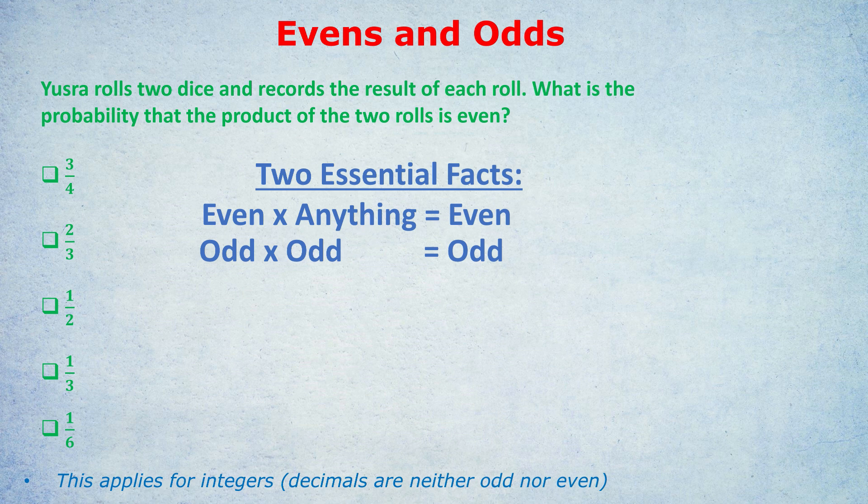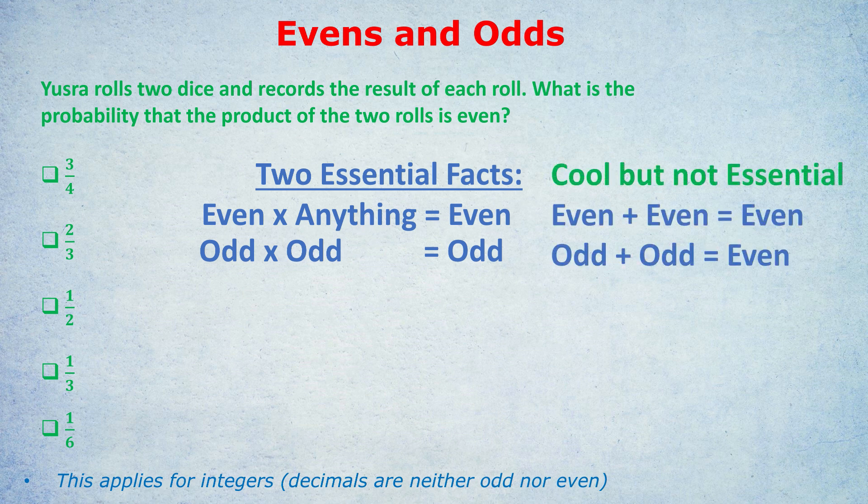Those are the two most essential facts you need to know about evens and odds. Some of you will ask about adding and subtracting — you don't really need to memorize those rules, but I'm going to show you them in a cool way. They're not nearly as essential as the first two rules.